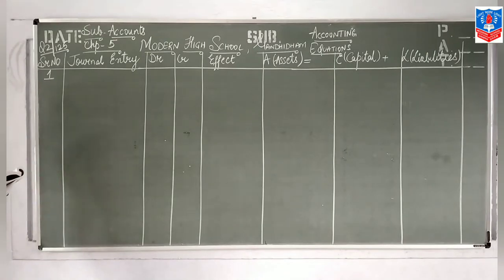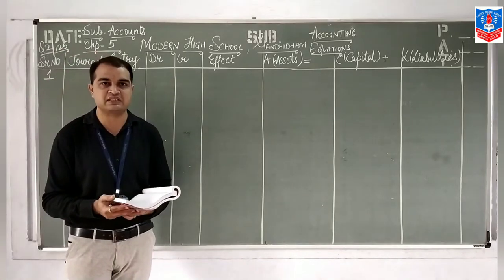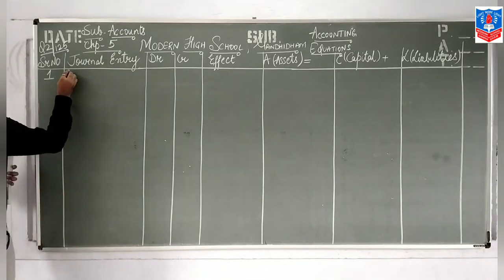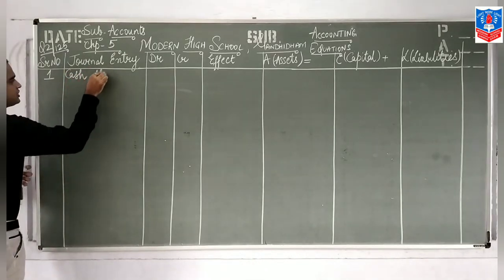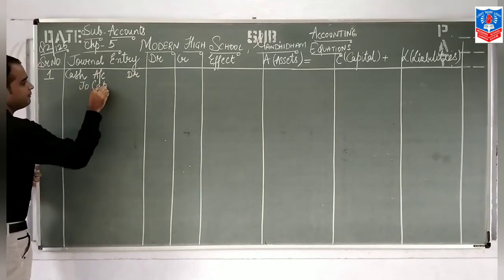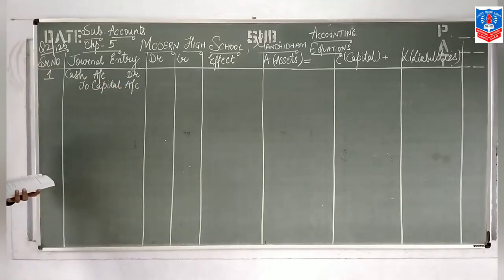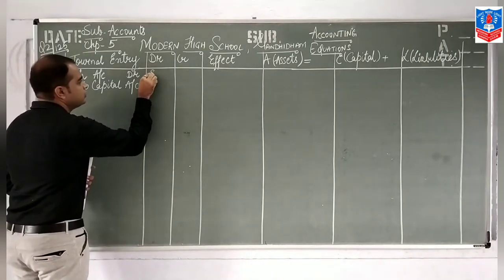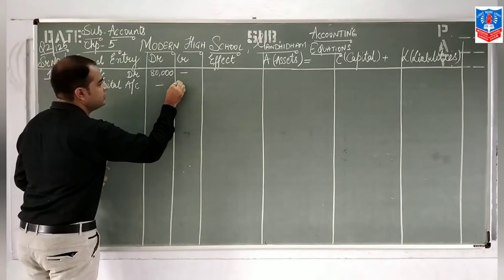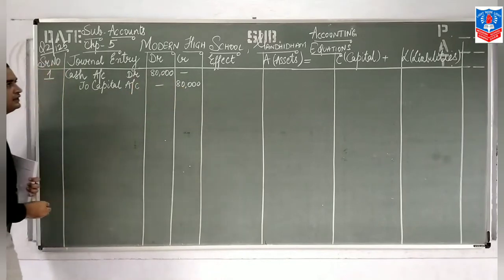Business has started. We have commenced and introduced our business, so cash comes into the business. The entry will be: Cash Account debit to Capital Account. Cash is of 80,000, so in the debit column you will write 80,000 and against capital you will write 80,000.